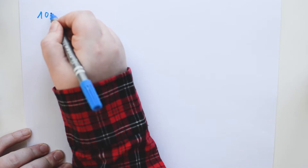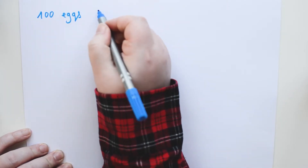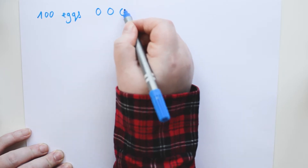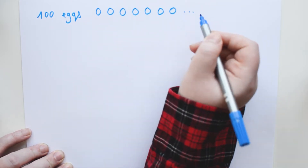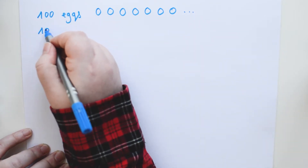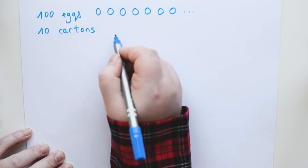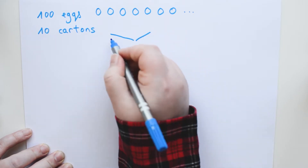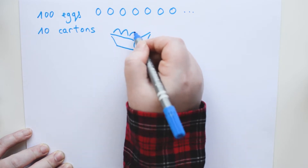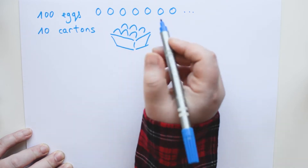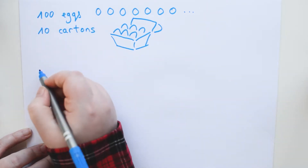Imagine you have a bunch of eggs on your kitchen counter. For some reason you cannot see or touch anything, but you know there are 100 eggs, and that some of them are in groups of 6 inside cartons. You know that the eggs inside the cartons are pretty safe, but you're concerned about the eggs that are hanging out freely because they might roll off the counter, fall on the floor, and break. You also know that there are 10 cartons, and you want to find out how many free eggs you have and therefore how concerned you should be about having a mess in your kitchen.